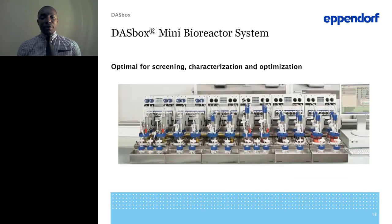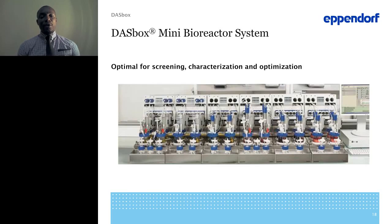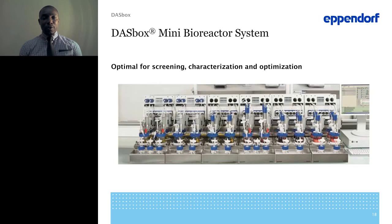This slide shows how compact the system is. In a six-foot space you are able to fit about 24 vessels. You also have the option for customers who work with dual processes — such as fermentation as well as cell culture — to split the system: the first 12 on the left for fermentation culture and the right for cell culture. The system is very compact, making it ideal for screening and optimization without occupying too much bench space.